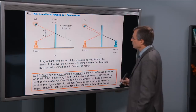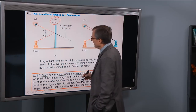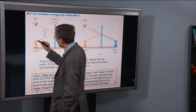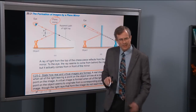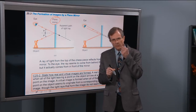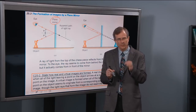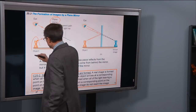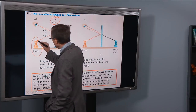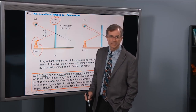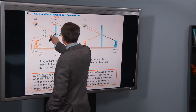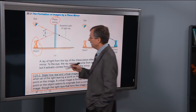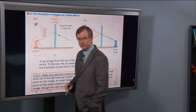So if we have a plane mirror and we have a chess piece, and we're interested in a ray of light that leaves the top corner of this chess piece. When we're trying to figure out what the image looks like, we need to pick out a particular point on the object of interest. The point of interest is the top right corner of the chess piece. It heads toward the mirror and bounces off in a specular reflection, with the angle of incidence equaling the angle of reflection.